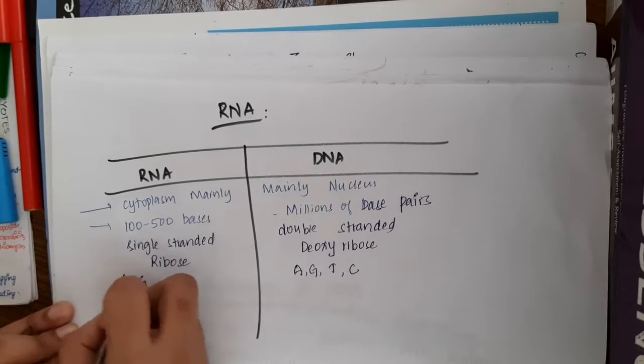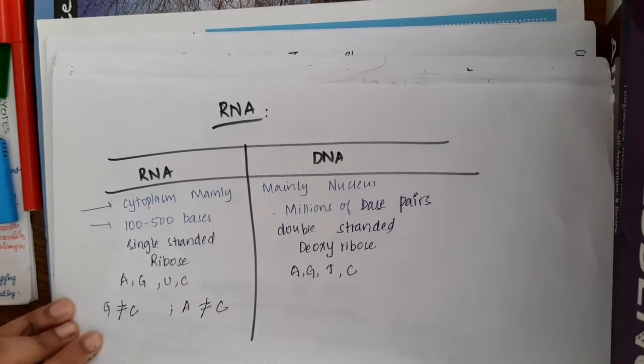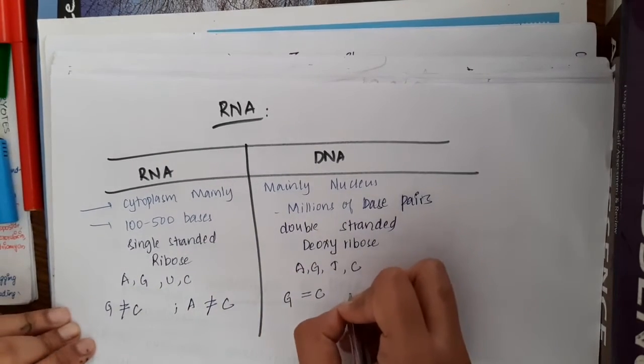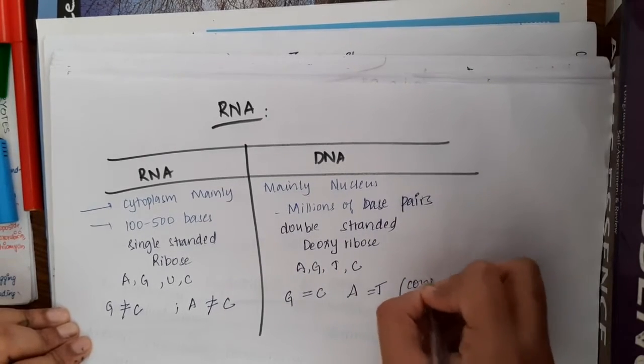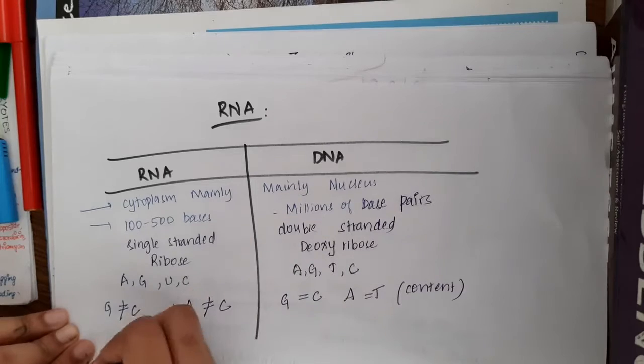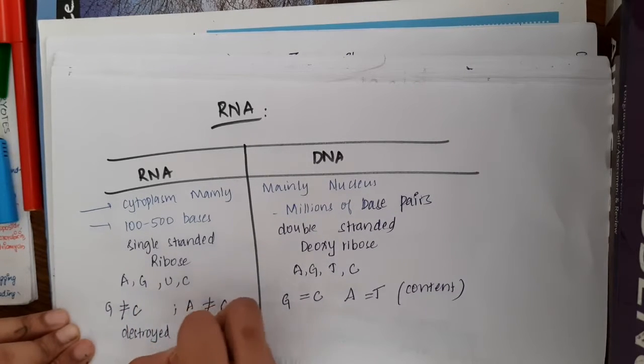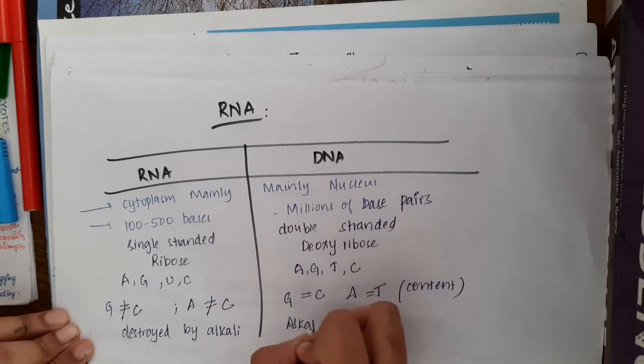In RNA, guanine content is not equal to cytosine and adenine content is not equal to uracil. Whereas in DNA, adenine equals thymine. Then RNA is destroyed by alkali, whereas DNA is alkali resistant.